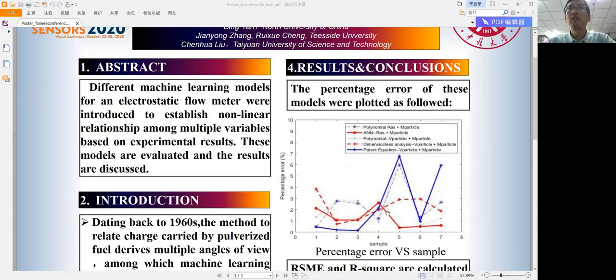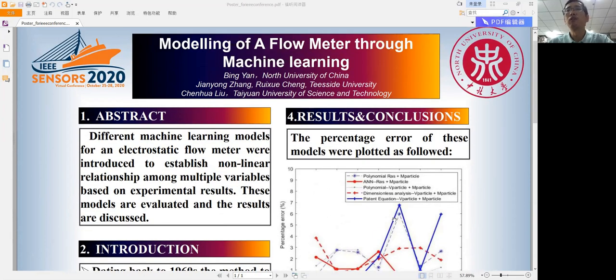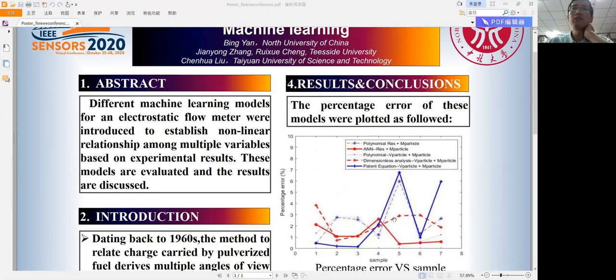The percentage error of these models was plotted as follows. Five models appear here. As we can see, the ANN model performs better than others.